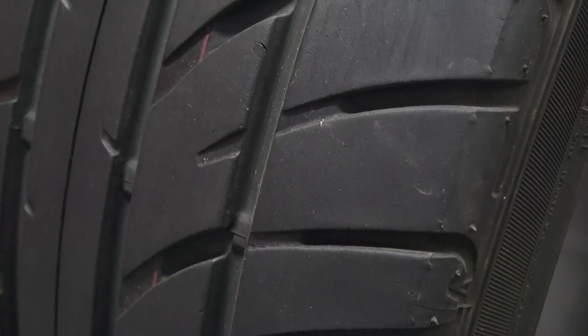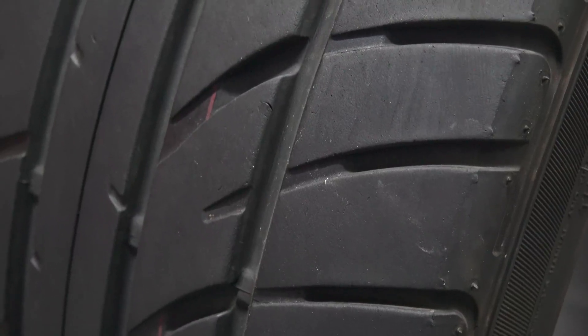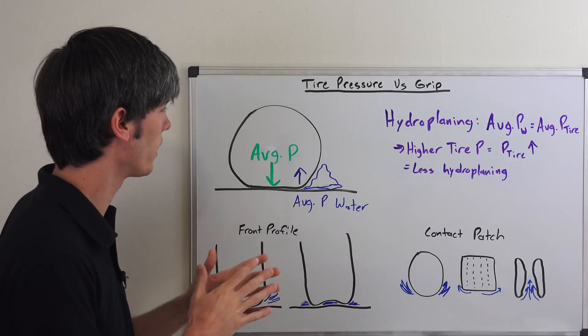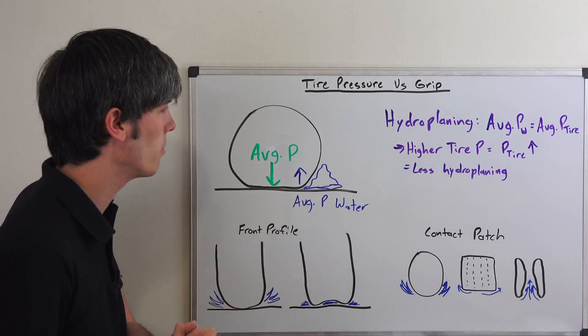So, how does tire pressure affect grip? Well, let's say you're on a track day, and it's sunny and dry. In this case, it can be beneficial to decrease your tire pressure, because you can get a larger contact patch, and as a result, more grip. That said, the complete opposite can happen in the wet. So, here we're going to be talking about hydroplaning.